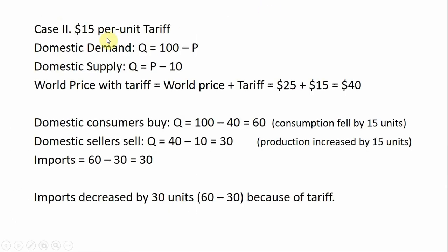Now the case with trade — the government will impose a $15 per unit tariff. The domestic demand and supply curves don't change. The world price with the tariff becomes the new price in the domestic economy: $25 plus the tariff of $15 gives a new price of $40. Domestic consumers will now buy 100 minus 40 equals 60 units — consumption fell by 15 units compared to the free trade case.